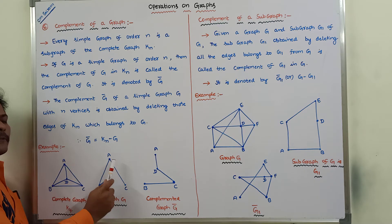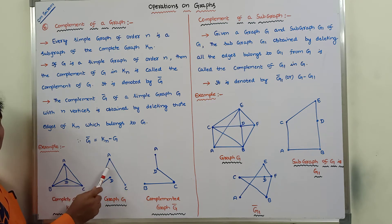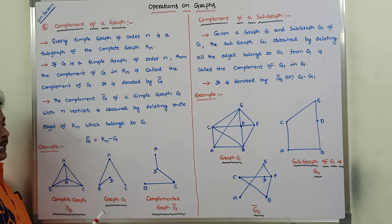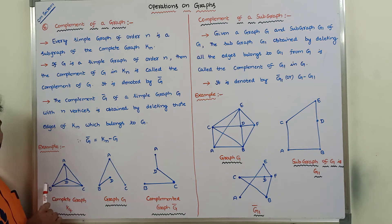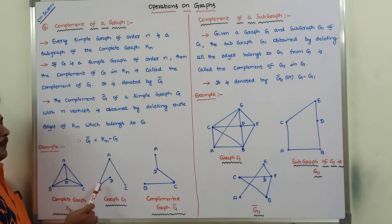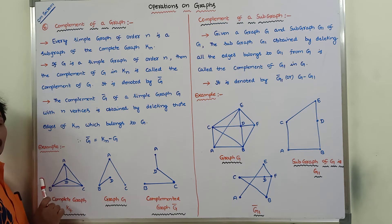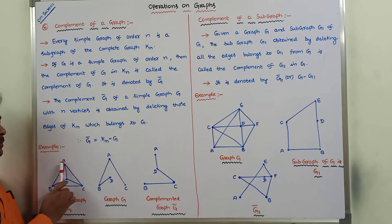We have to verify that graph G is a subgraph of complete graph K4. All the vertices A, B, C, D are present in K4. All edges — AB, AC, BD — are also present in K4. Hence we can say that graph G is called a subgraph of complete graph K4.